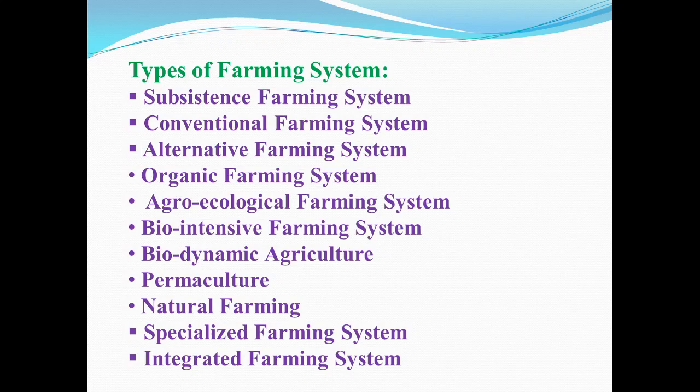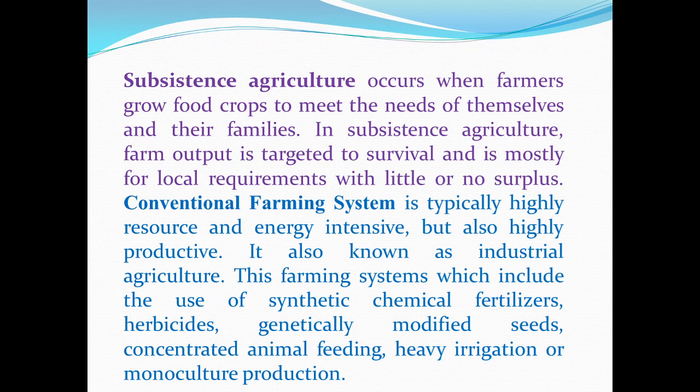The types of farming systems are: subsistence farming systems, conventional farming systems, alternative farming systems, organic farming systems, agroecological farming, bio-intensive farming, biodynamic farming, permaculture, natural farming, specialized farming and integrated farming systems.